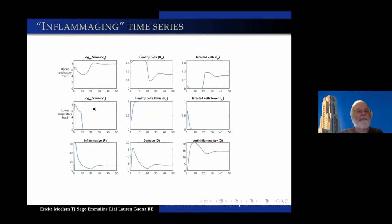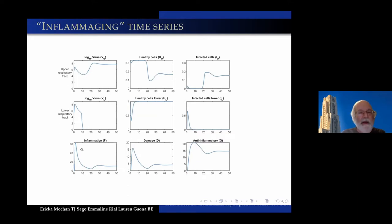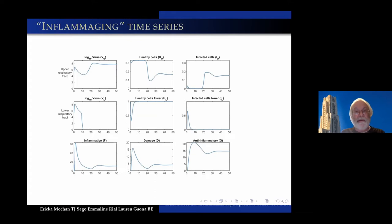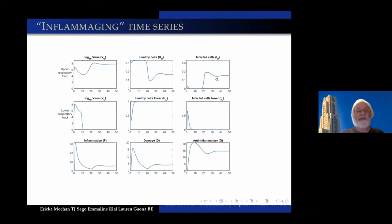Here are some time series examples. In the lower respiratory tract, when you have inflammation the virus is wiped out, but the inflammation comes on and remains chronic — damage remains chronic. Here's an example in the upper respiratory tract: you can think of this as chronic damage to the upper respiratory tract, perhaps losing your sense of smell or something like that, while the infection remains ongoing.